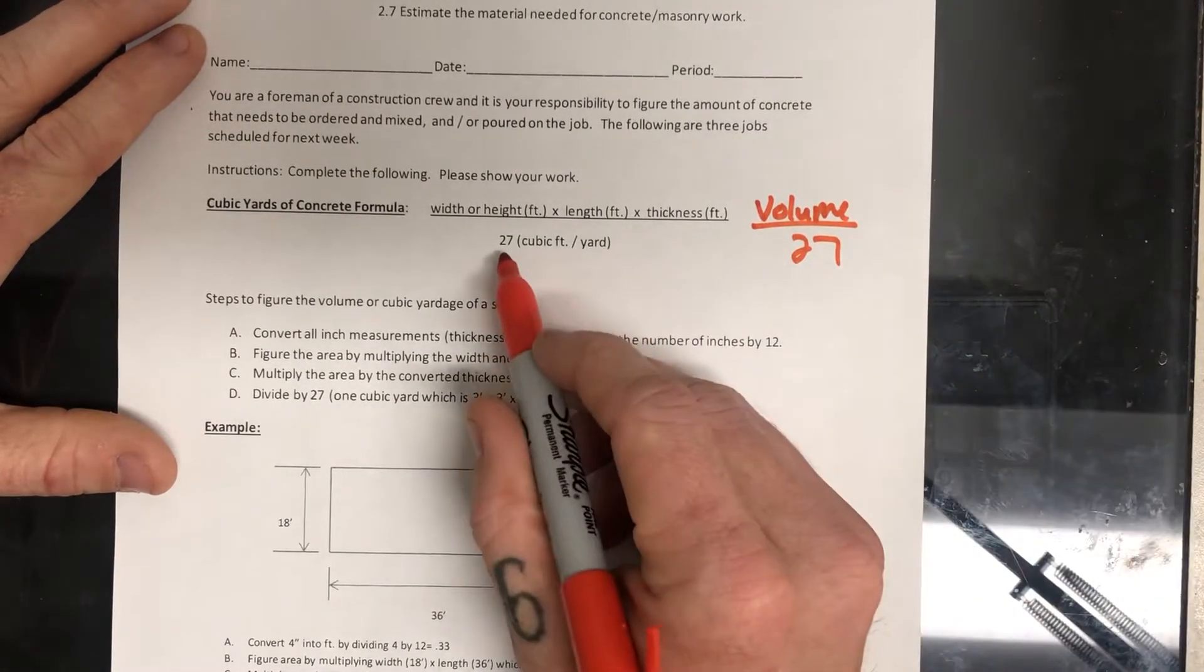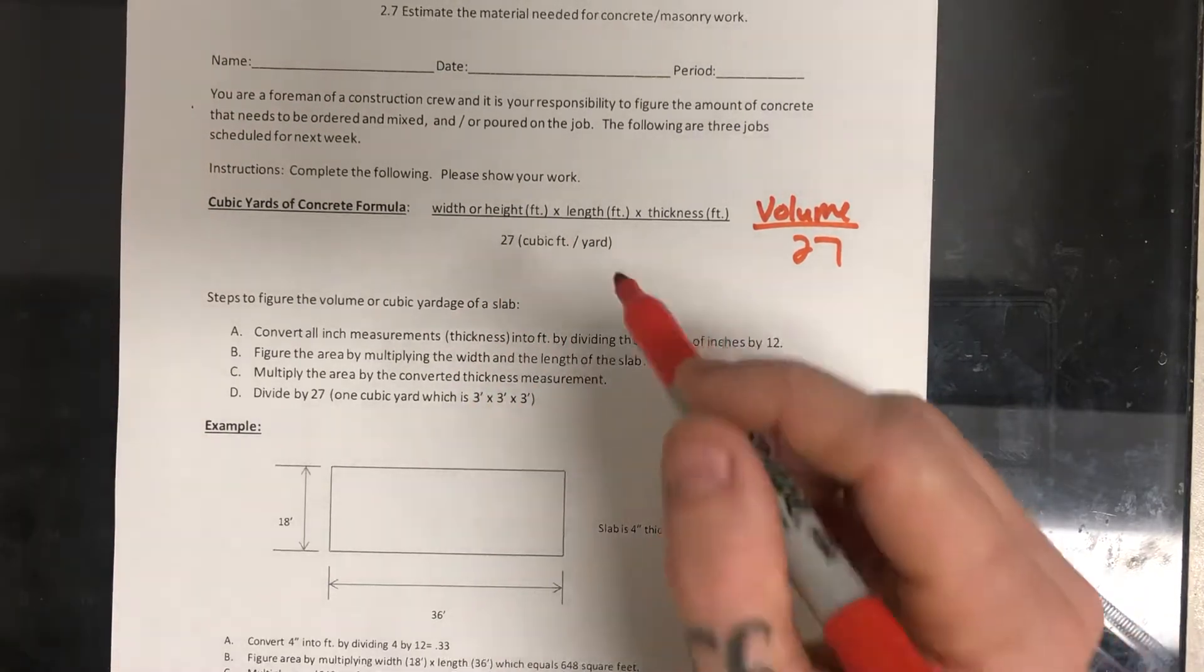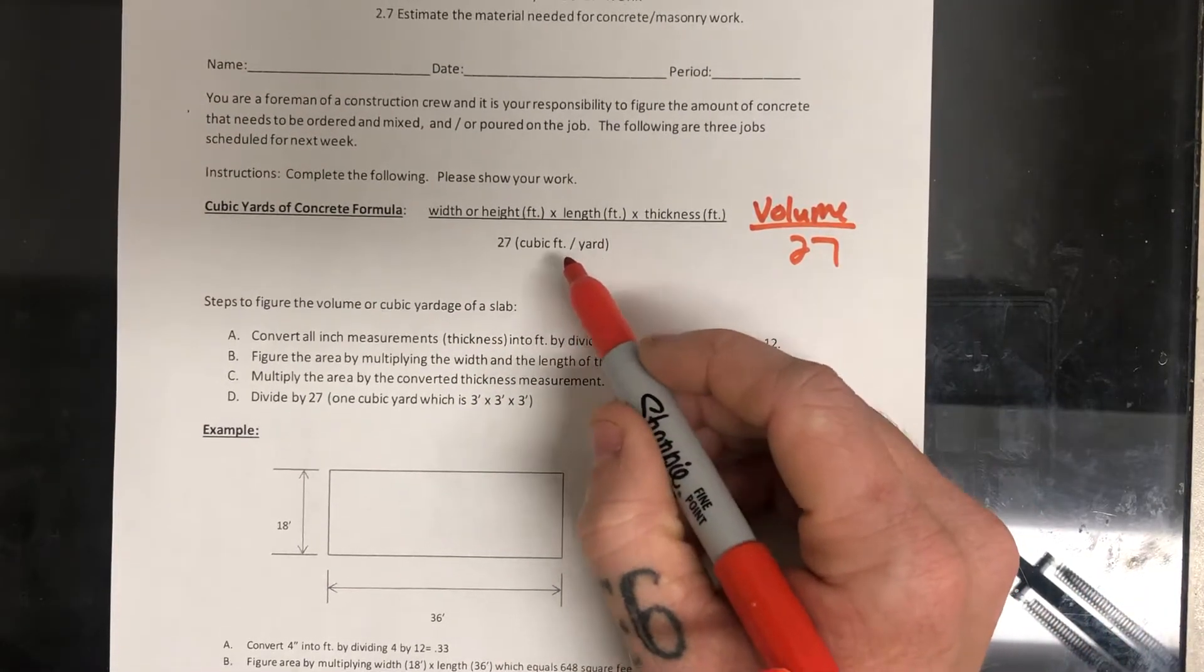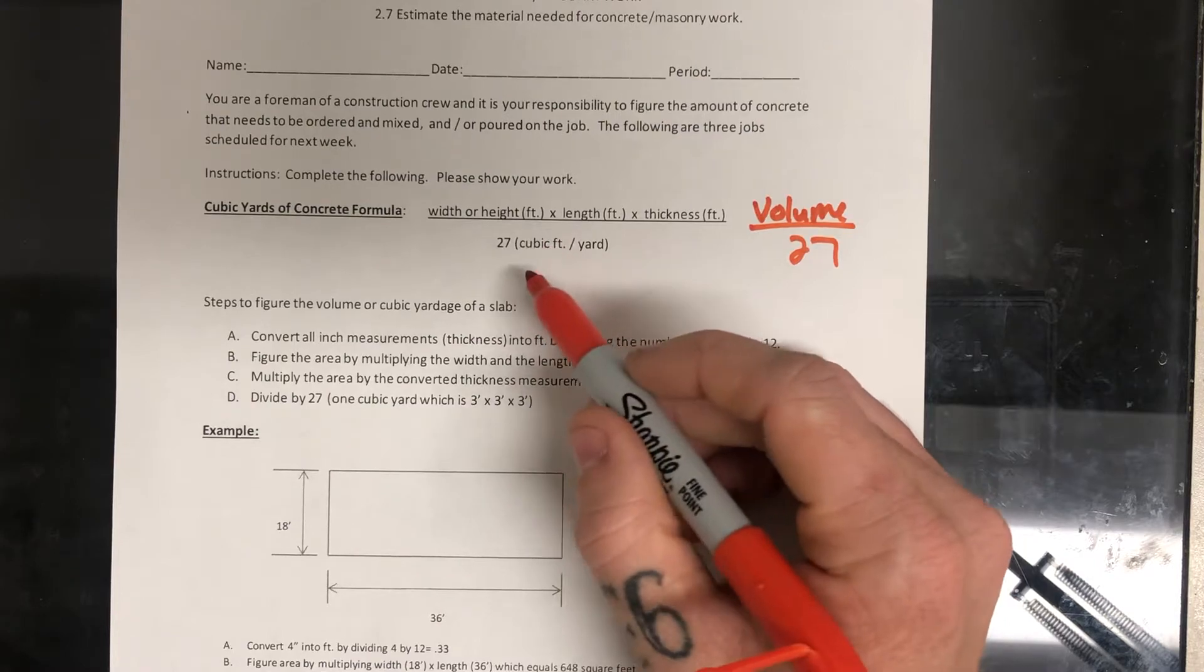Okay, and the 27 comes from cubic feet in a yard. So there's three feet in a yard, and three cubed is 27. So that's where that comes from.